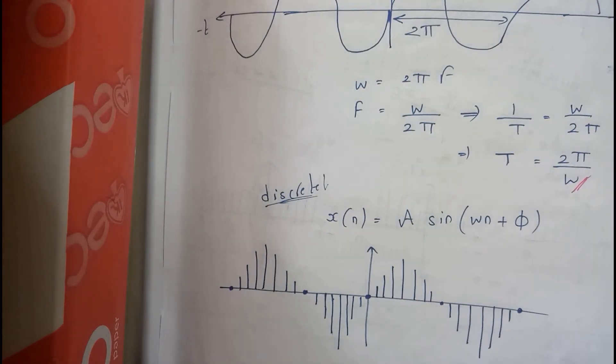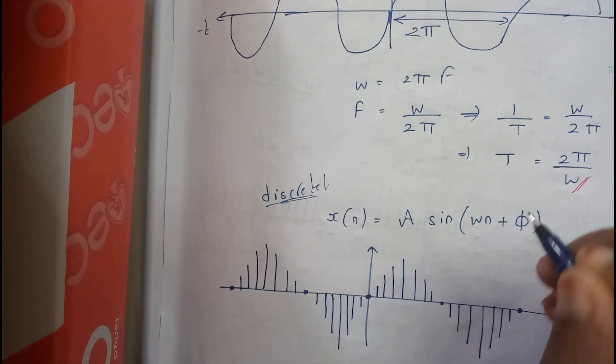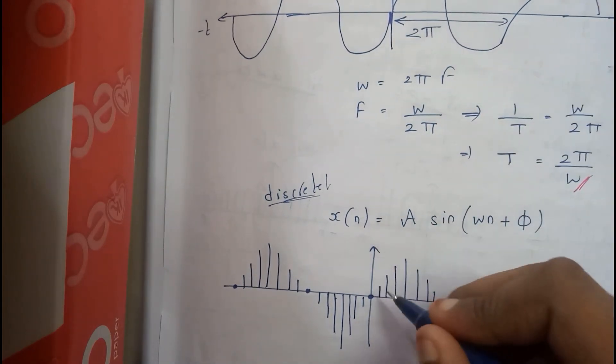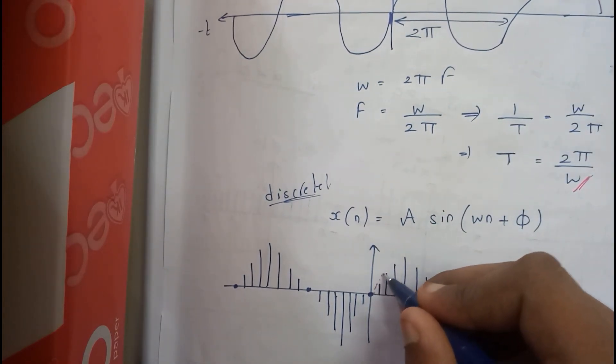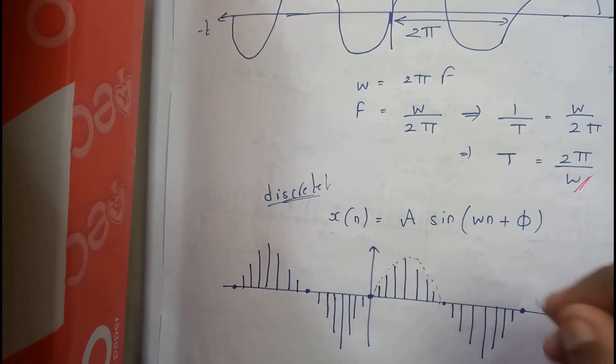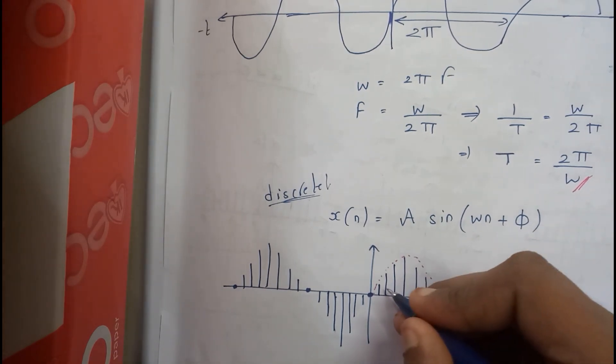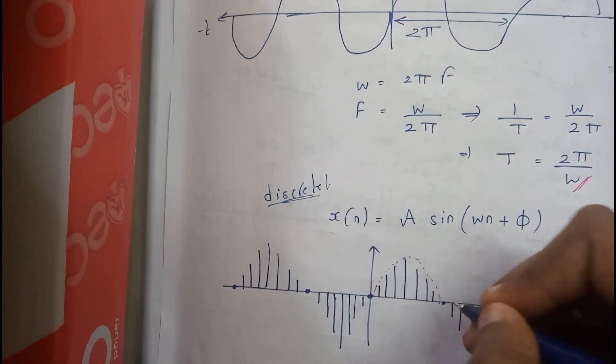So guys, if you have any confusion in drawing these signals, just first draw the original continuous signal with pen. Sorry, with pencil. Okay. And just erase it lightly.